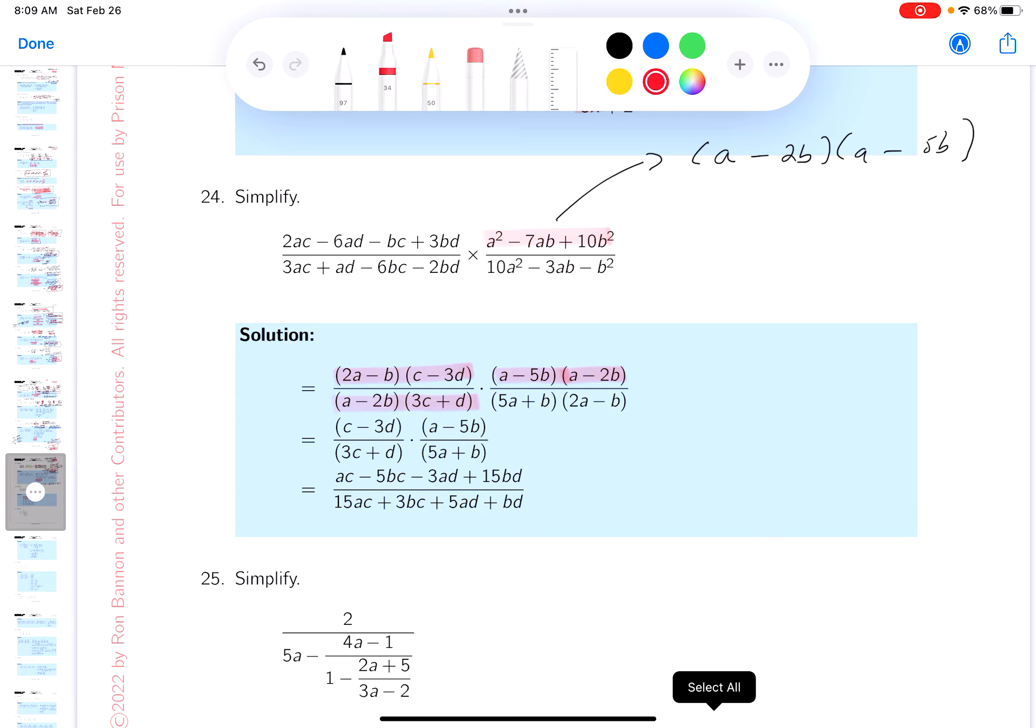Let's make sure it's in the key. I see the a minus 2b and I see the a minus 5b. Factoring is your first step. All right, let's do the next one. Let me get my eraser out and get rid of this stuff though.